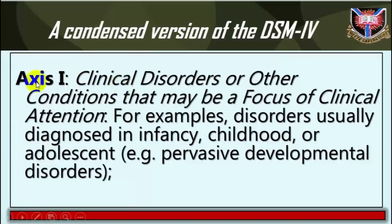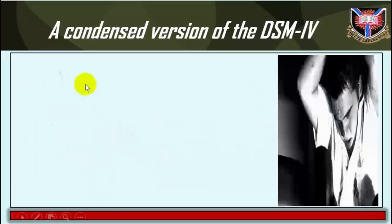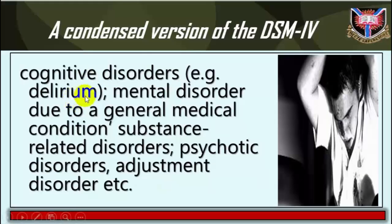A condensed version of DSM-IV. Axis 1: Clinical disorders or other conditions that may be a focus of clinical attention. Examples include: disorders usually diagnosed in infancy, childhood, or adolescence such as pervasive developmental disorders; cognitive disorders such as delirium; mental disorders due to a general medical condition; substance-related disorders; psychotic disorders; and adjustment disorders.